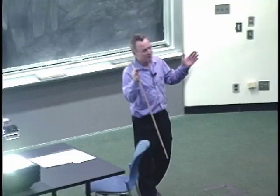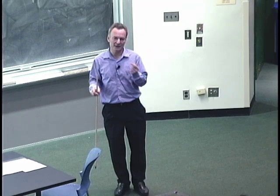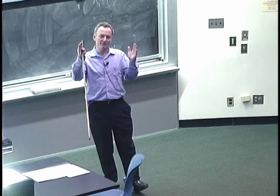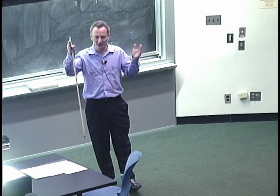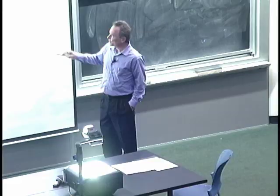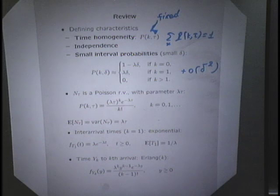The number of arrivals you can get during an interval of a certain length can be anything. The probability of getting a very large number of arrivals is tiny, but in principle it's possible — because an interval consists of an infinite number of mini-slots in some sense. The resulting PMF is not very intuitive when you look at it, but it's a legitimate PMF called the Poisson PMF, and it describes the number of arrivals.